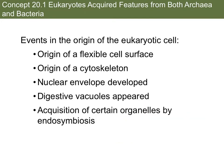The events that occurred in order to have the arisal of that eukaryotic cell include the origin of that flexible cell surface, the origin of the cytoskeleton, the appearance of that nuclear envelope, digestive vacuoles where specific chemical reactions can take place, and the acquisition of certain organelles by endosymbiosis.